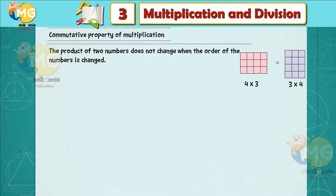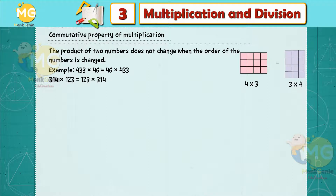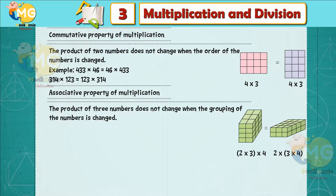Properties of multiplication. Commutative property of multiplication: the product of two numbers does not change when the order of the numbers is changed. For example, 4 × 3 = 3 × 4. Also, 433 × 46 = 46 × 433, and 314 × 123 = 123 × 314.